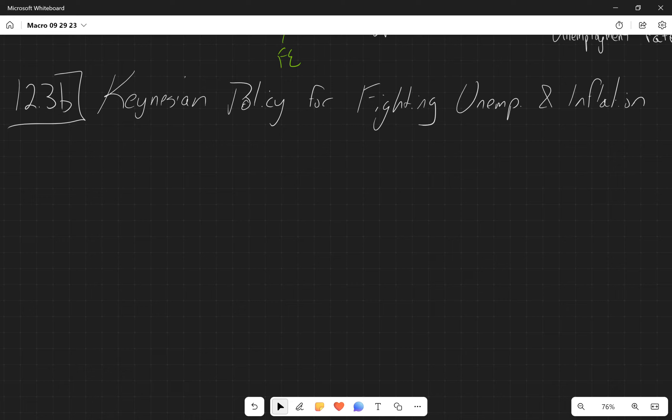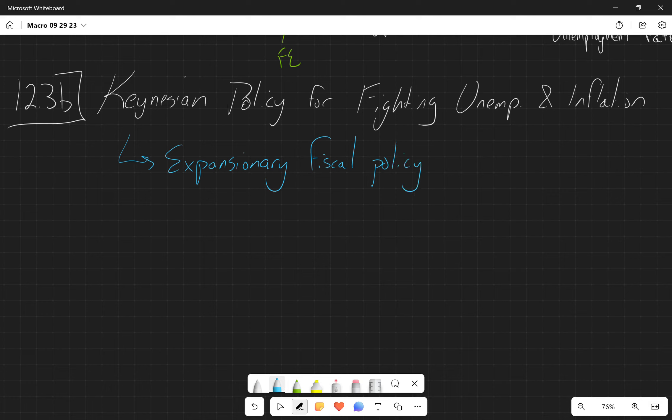Keynesian macroeconomists argue that the solution to recessions is to undertake expansionary fiscal policy. Fiscal policy is talking about government spending, and expansionary means we're going to have an increase in government spending.